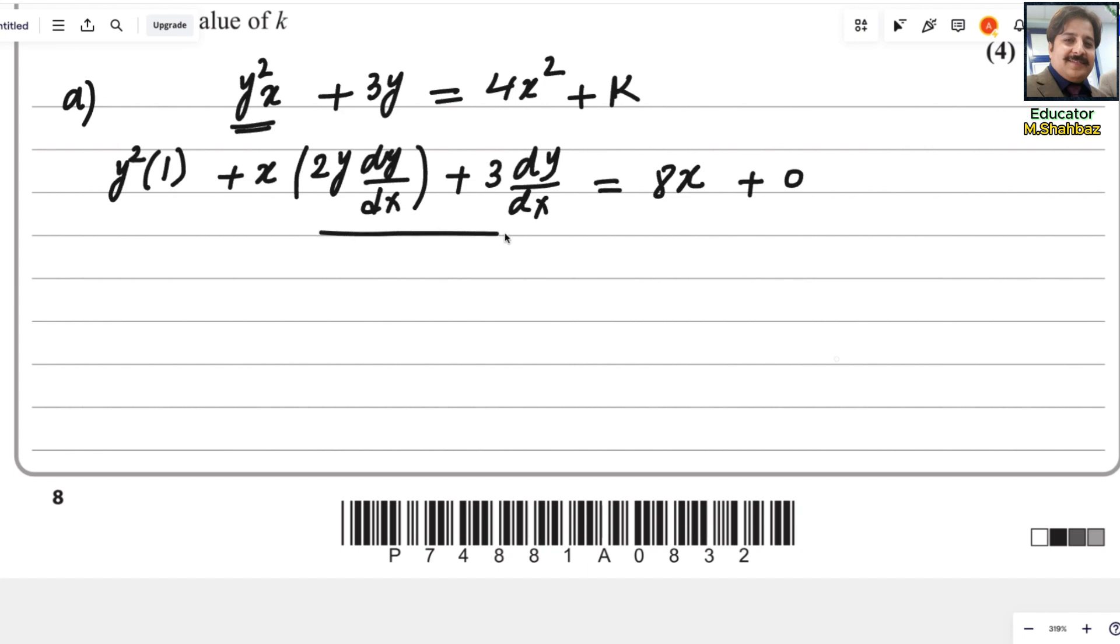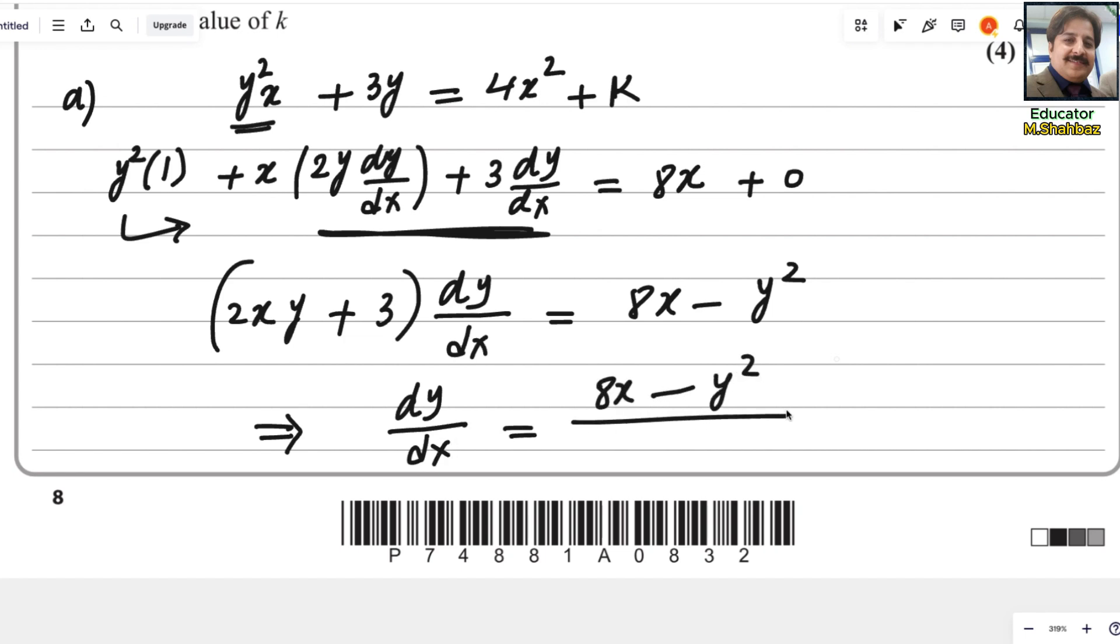Now we know that dy/dx is common. We will keep y² to the other side. So this 2xy + 3, common is dy/dx, and this one will be 8x - y². Because this 2xy + 3 is multiplying, it will divide the other side. It implies that dy/dx equals 8x - y² divided by 2xy + 3. So this is the answer for the first part.